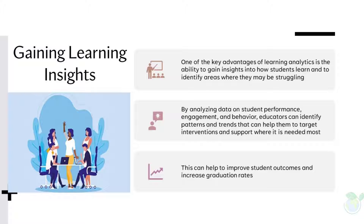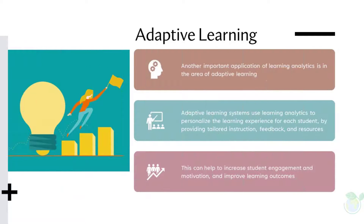This can help to improve student outcomes and increase graduation rates. Another important application of learning analytics is in the area of adaptive learning. Adaptive learning systems use learning analytics to personalize the learning experience for each student by providing tailored instruction, feedback, and resources. This can help to increase student engagement and motivation and improve learning outcomes.